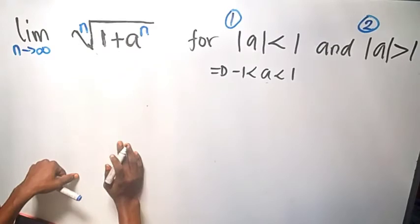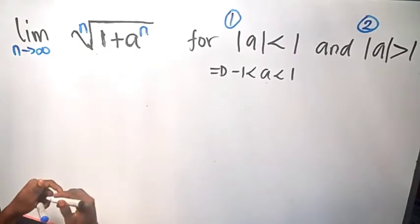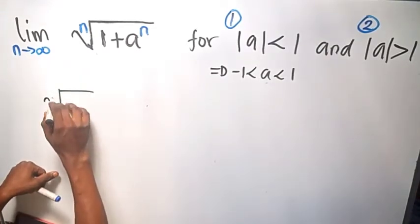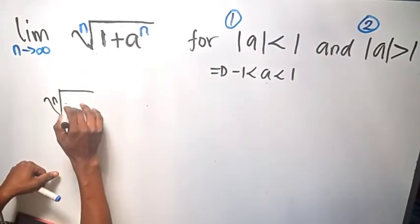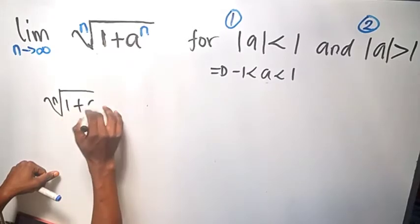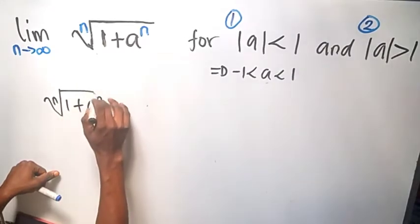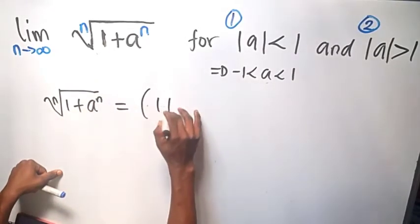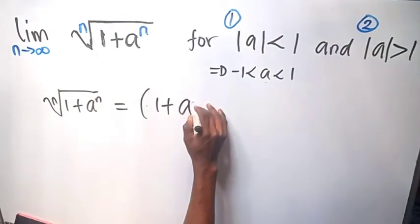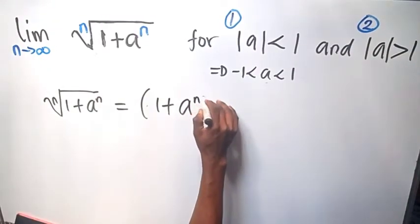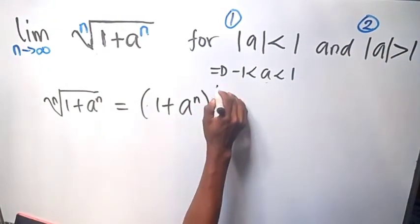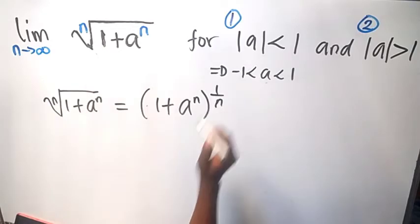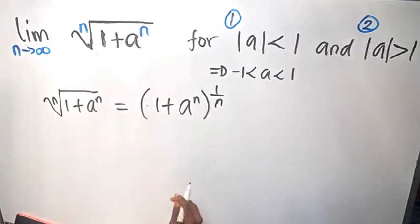To work on the function, we have the nth root of 1 plus a to the power of n. This can be written as 1 plus a raised to the power of n, all raised to the power of 1 over n, because of the root. So we get the exponent to be 1 over n.